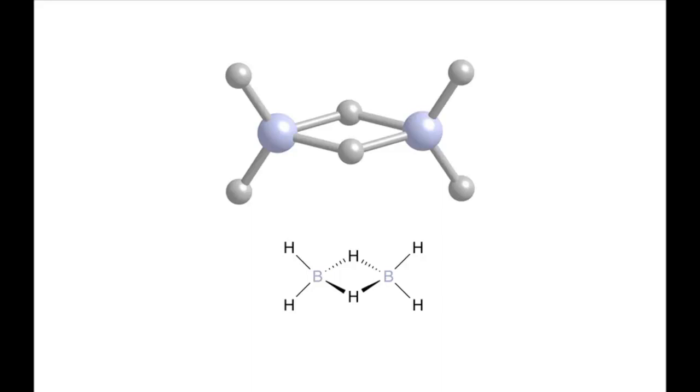The geometry around each boron atom is approximately tetrahedral, so you can assume that the boron atoms are sp3 hybridized. Two of the hybrid orbitals on each boron atom interact with the hydrogen 1s orbitals to form sigma bonding orbitals.